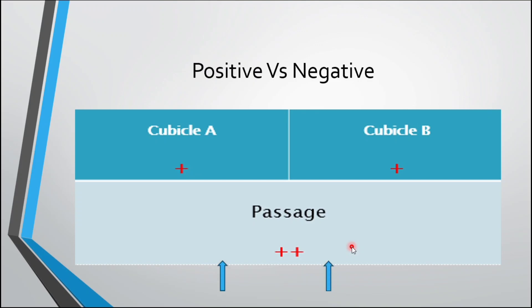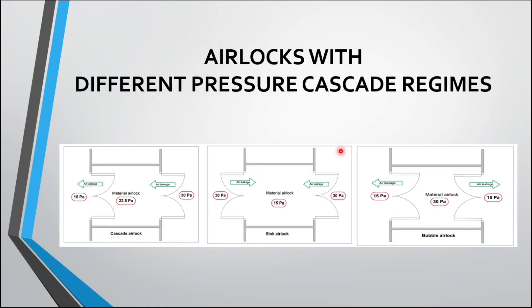In simple words, air flows from positive pressure to negative pressure. Based on air pressure or air flow, airlocks are differentiated into three different types: cascade airlock, sink airlock, and bubble airlock.